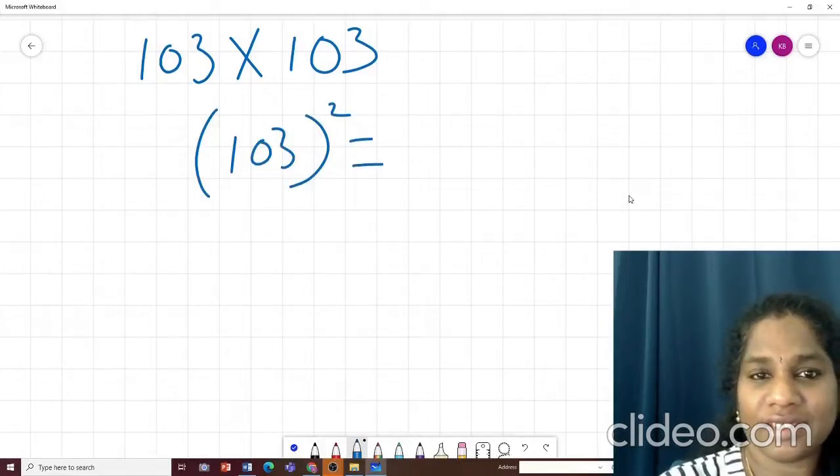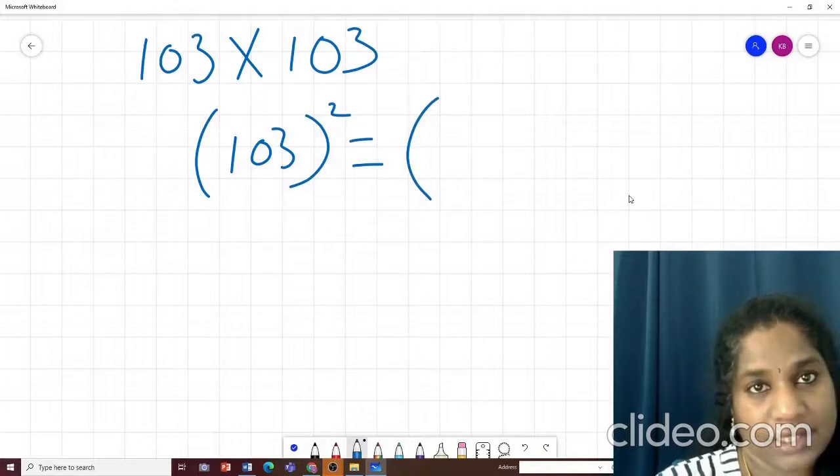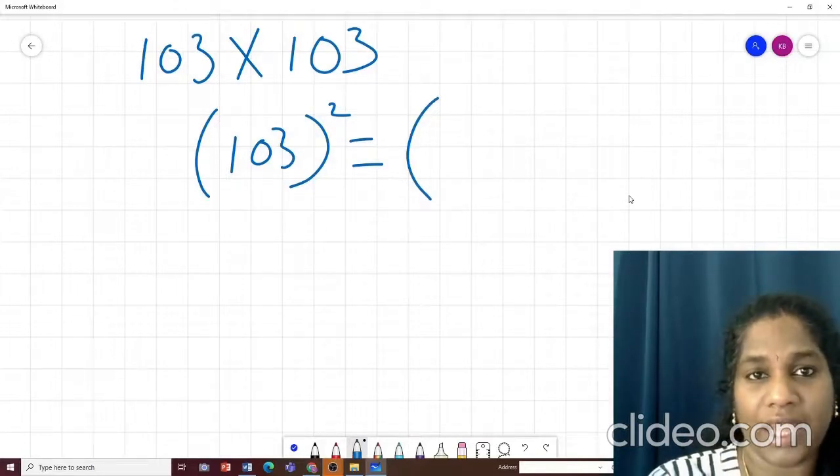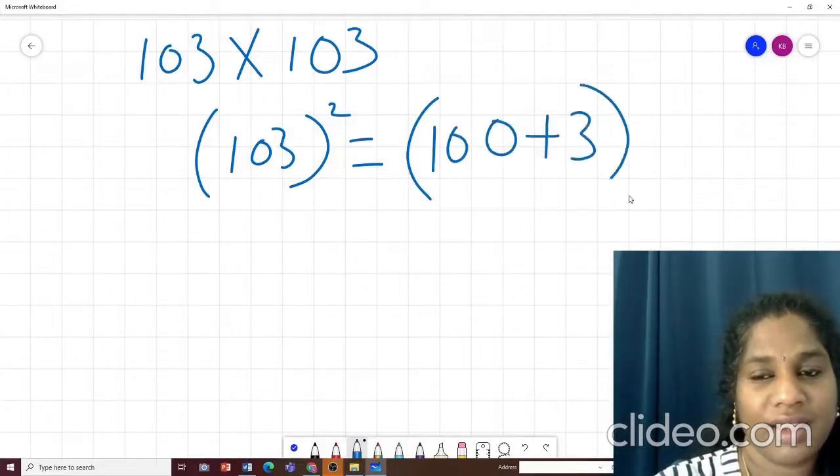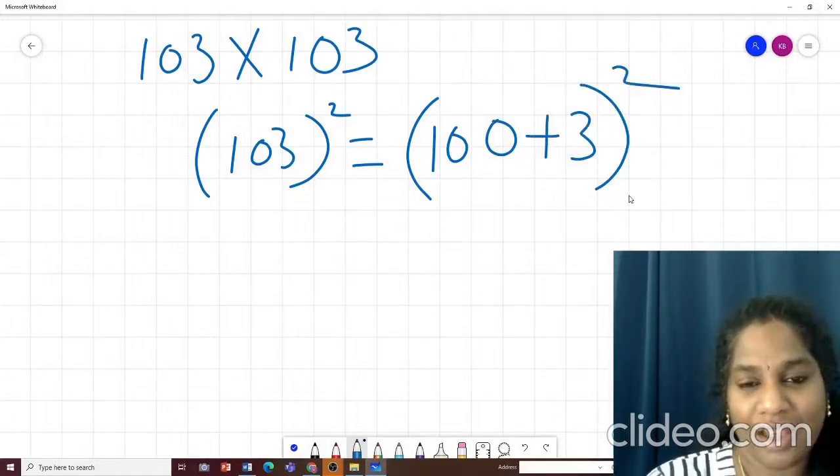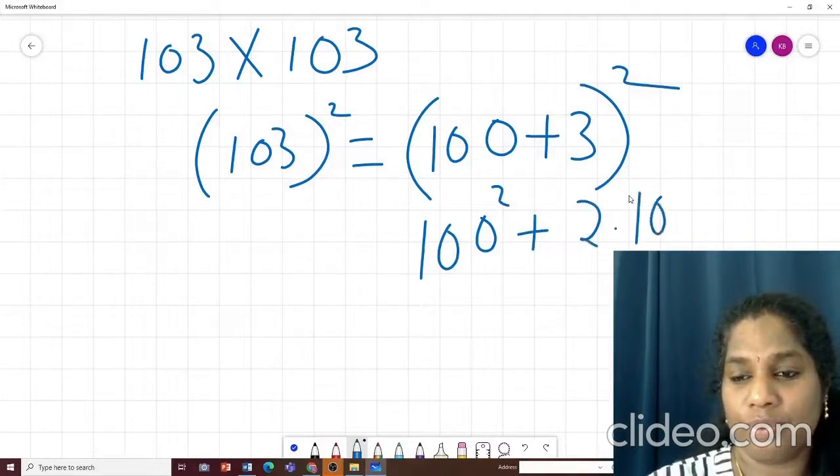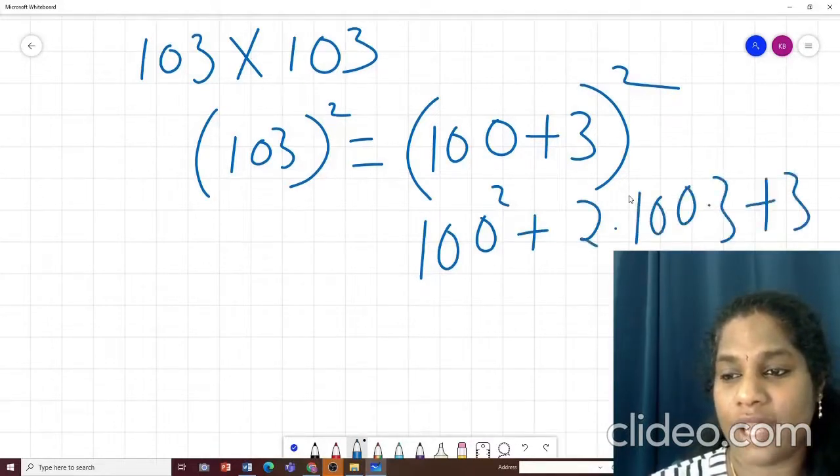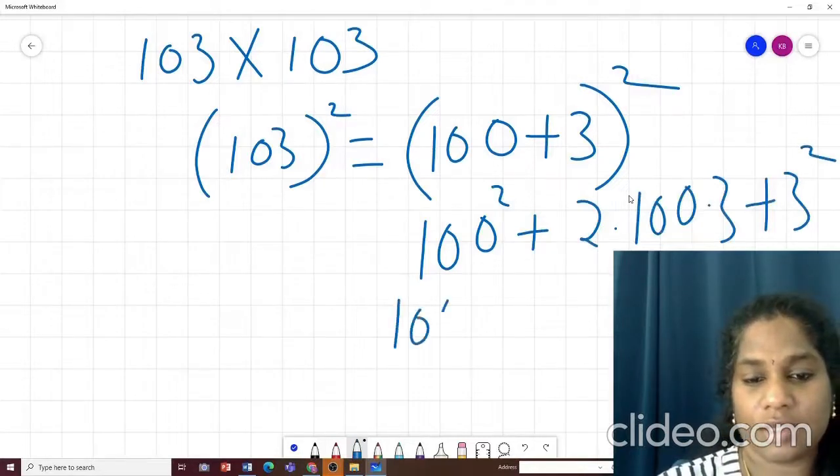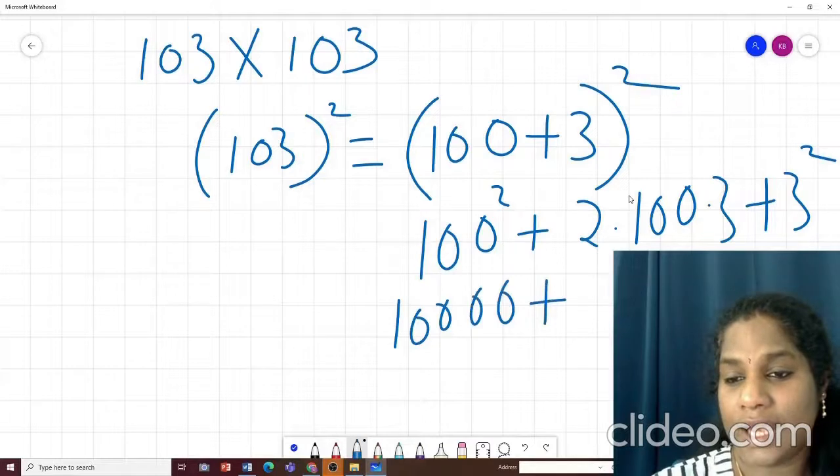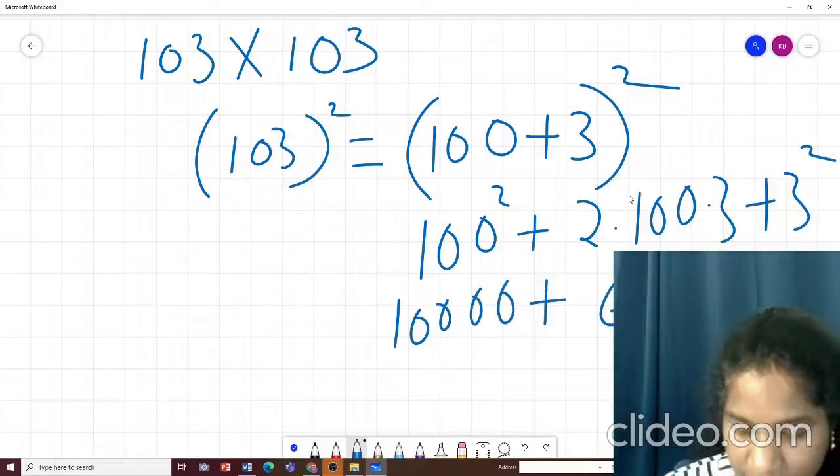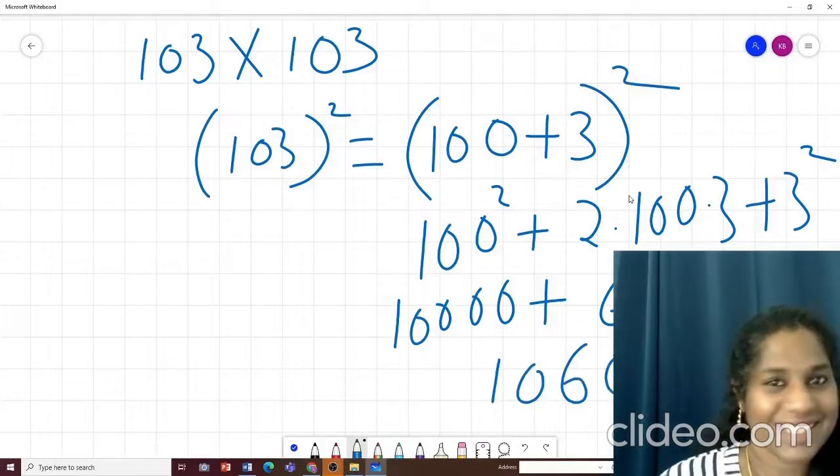So how can we write 103? I need to apply the identity. For identity, I need 2 variables. What will be that? What will be my A and what will be my B? My A will be 100. My B will be 3. I got A plus B whole square. So this is my A square plus 2 into A into B plus B square. So what is A square? 10000 plus 600 plus 9. So what is my answer? 10609. Isn't it simple?